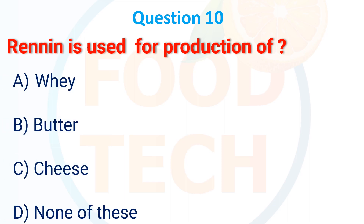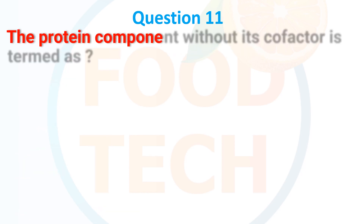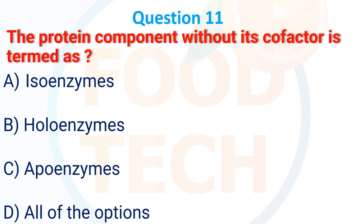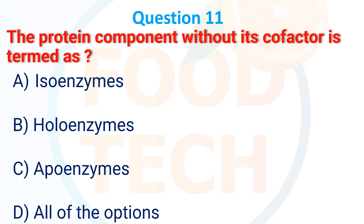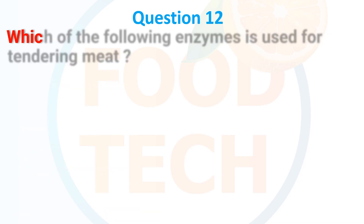Renin is used for the production of: A. Whey, B. Butter, C. Cheese, D. None of these. The answer is C. Cheese. The protein component without its cofactor is termed as: A. Isoenzyme, B. Holoenzyme, C. Apoenzyme, D. All of the options. The answer is C. Apoenzyme.